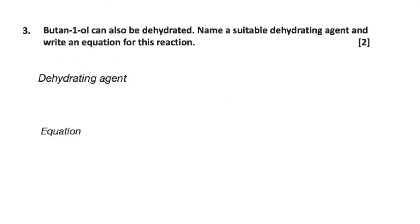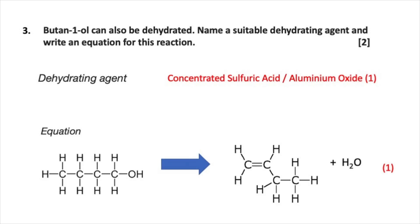Question 3 states that butan-1-ol can also be dehydrated, and asks you to name a suitable dehydrating agent and write an equation for this reaction. A suitable dehydrating agent is concentrated sulfuric acid or aluminium oxide — either would work, earning one mark. For the equation: butan-1-ol converts to but-1-ene and water. This reaction is an example of an elimination reaction.